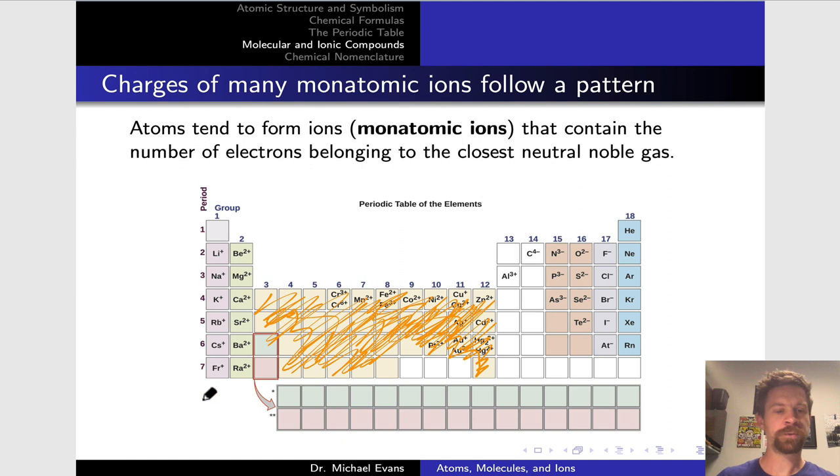Group 1 always forms cations with plus 1 charge. Group 2 always forms cations with plus 2 charge. If we jump over to the other side of the main group, we see that group 13 when it is found in ionic compounds forms ions with a charge of plus 3. And then when we get to group 14 there's an interesting switch that takes place with carbon forming ions with charge of negative 4, nitrogen negative 3, oxygen negative 2, and fluorine negative 1.